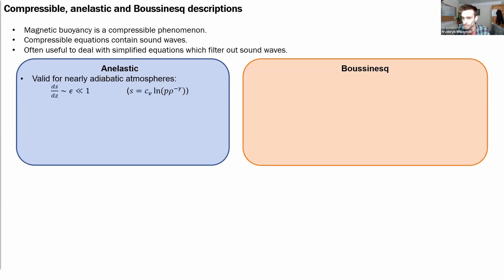The anelastic approximation is valid for atmospheres which are nearly adiabatically stratified, meaning that the vertical entropy gradient is small, and then one can obtain governing equations known as the anelastic equations for slow evolution of fluctuations on top of fixed hydrostatic background.